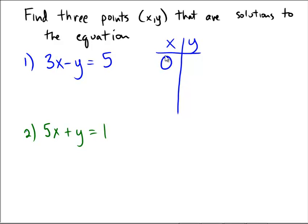I'm going to let x equals zero. If I choose to let x equals zero, then if we look at the original equation here and replace x with zero, we'd end up having three times zero minus y equals five, which would mean that negative y would equal five.